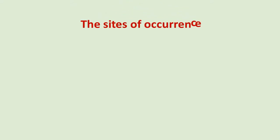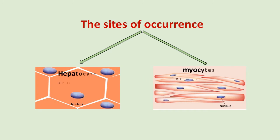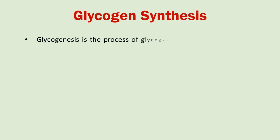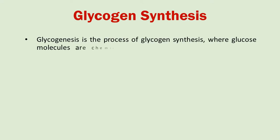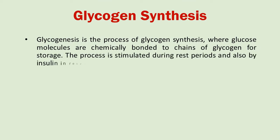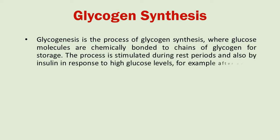The site of occurrence of both glycogenolysis and glycogenesis are hepatocytes, or liver cells, and myocytes, or muscle cells. Glycogenesis is the process of glycogen synthesis, in which glucose molecules are added to the chains of glycogen for storage. This process is activated during rest periods and also by insulin in response to high glucose levels — for example, after taking a carbohydrate-containing sweet in food.